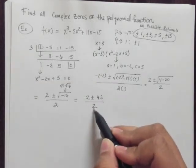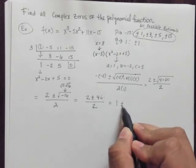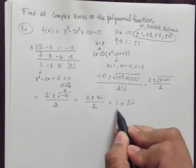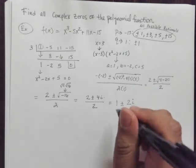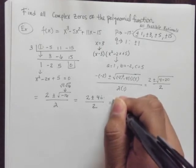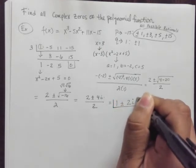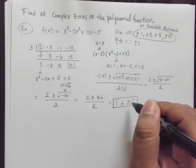2 divided by 2 here is 1. And 4i divided by 2 is 2i. So 1 plus and minus 2i is what we have right here. So then we've got this right here as our solution for the other zeros.